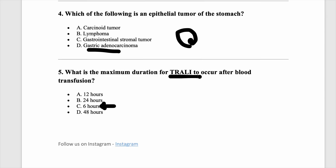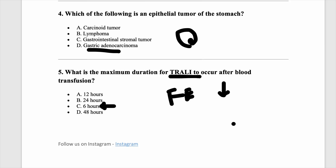TRALI and TACO is a very common differentiation to know. One feature to differentiate TRALI versus TACO: TRALI will have fever, because TRALI is an inflammatory pathology. TACO is circulatory overload and will not have fever. TRALI will have hypotension; TACO with volume overload will have hypertension. These two things can easily help you differentiate even in a five or six line clinical scenario.